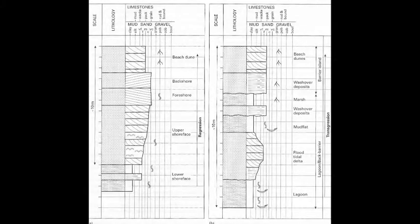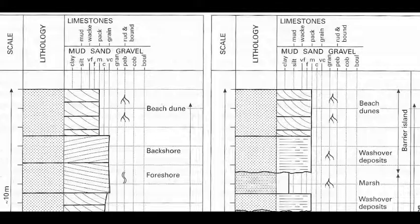Here are two stratigraphic columns we will be using to explain the change of depositional environments on barrier islands. Stratigraphic columns show a sequence of rock units and are arranged with the oldest rocks on bottom and the youngest rocks on top. For our purposes, ignore lead transgression and regression and scales on top. We are interested in the depositional environments listed on the right of each column and the correlating figures drawn on the column. We will use these as a guide to understanding the unique characteristics of each environment and how it is seen in a geologic record in relation to the other environments. We are only going to focus on the top portions of each column and will refer back to these throughout the video.